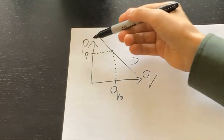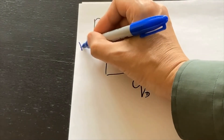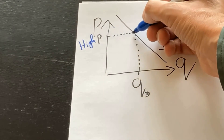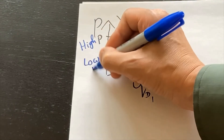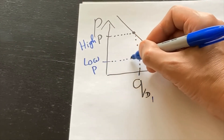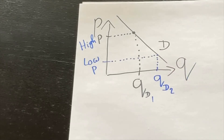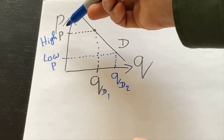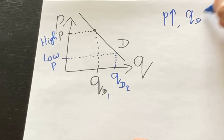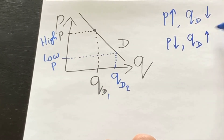The demand is the relationship between prices and quantities demanded. If you pick a high price, you get quantity demanded one. If you pick a low price, you get quantity demanded two. It means that if price goes up from low price to high price, then quantity demanded falls from Q2 to Q1. And the other way around, if price goes down, quantity demanded goes up. That's why demand is a downward sloping curve.